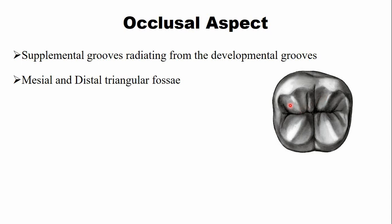There are two fossae on the occlusal surface. Just adjacent to the mesial marginal ridge, there is a triangular depression called the mesial triangular fossa. Adjacent to the distal marginal ridge, there is another depression called the distal triangular fossa. These are the key identification features and main details about the mandibular second molar.